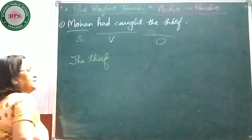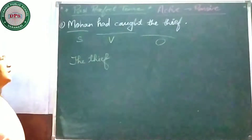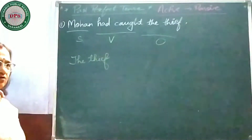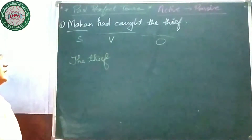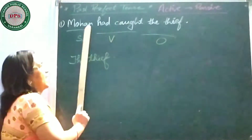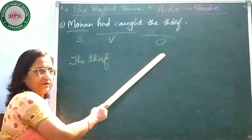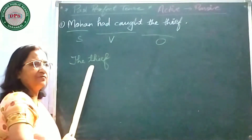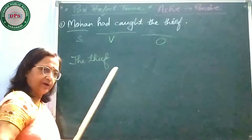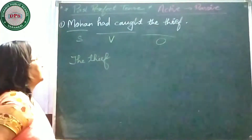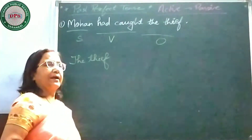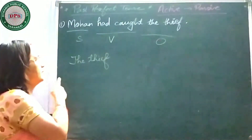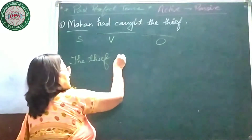Why have I written 'the thief'? Please recall the first rule: the object of active voice will become the subject of passive voice. So we write 'the thief.' Now you have to write down the helping verb — what is the helping verb? 'Had.' So: 'the thief had...'